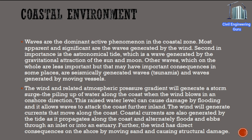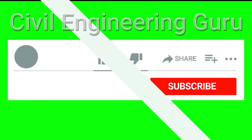The wind and related atmospheric pressure gradient will generate a storm surge — the piling up of water along the coast when the wind blows in an onshore direction. This raised water level can cause damage by flooding and allows waves to attack the coast further inland. The wind will generate currents that move along the coast. Coastal currents are also generated by the tide as it propagates along the coast and ultimately floods and ebbs through an inlet or into an estuary. Further, the wind has direct consequences on the shore by moving sand and causing structural damage.